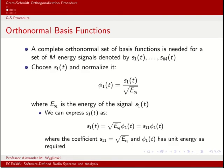Gram-Schmidt orthogonalization starts with the following process. We have available all the different signal waveforms that we would be using in our transmission — every unique waveform representing a binary pattern. We arbitrarily choose one waveform; let's start with S_1 of t without any loss in generality. What we do is take S_1 of t, normalize it by dividing by the square root of its energy, and that provides the first basis function phi_1 of t.